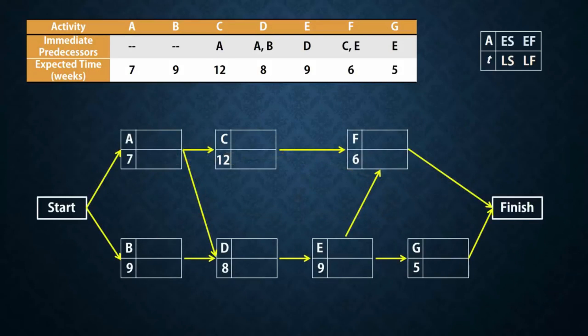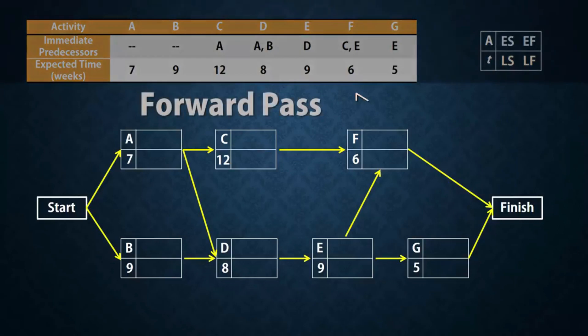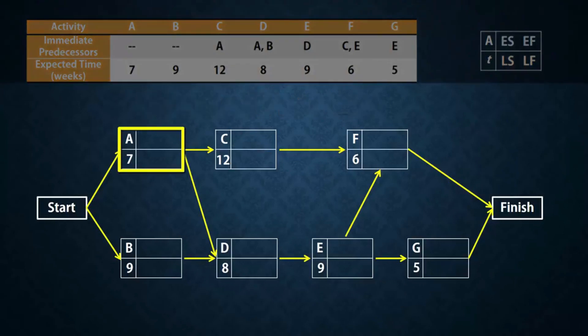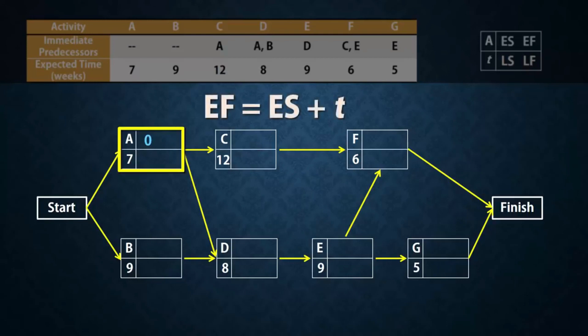Here is the network with the activity nodes displaying the letters and times. Let's do the forward pass. A has no predecessor so its earliest start time will be 0, or right away. Since it has 7 weeks to be completed, its earliest finish time will be 0 plus 7, which gives 7.